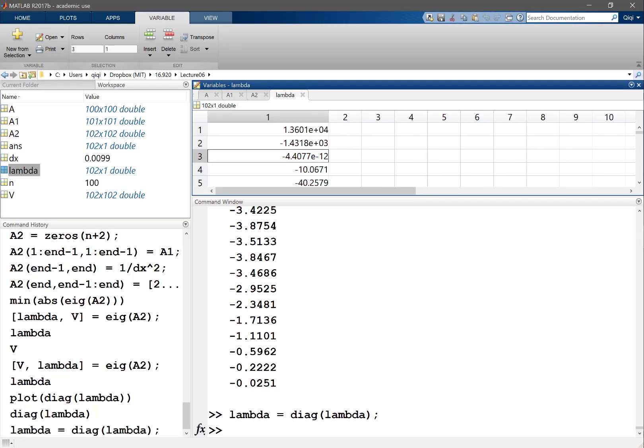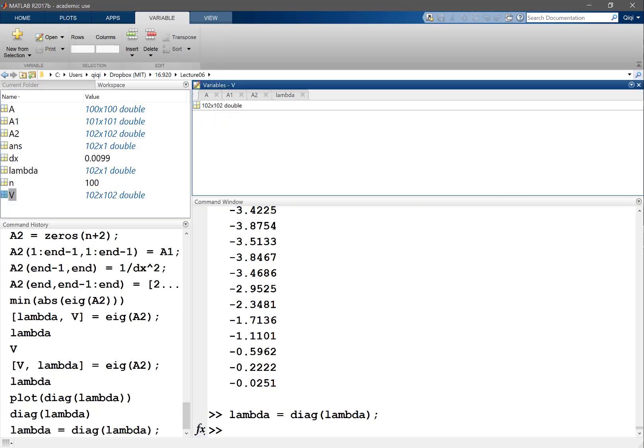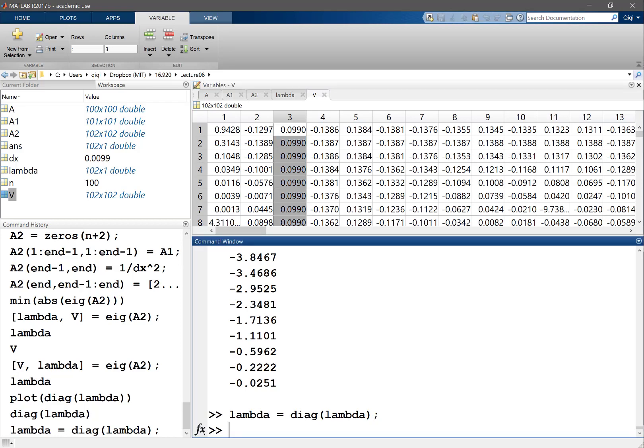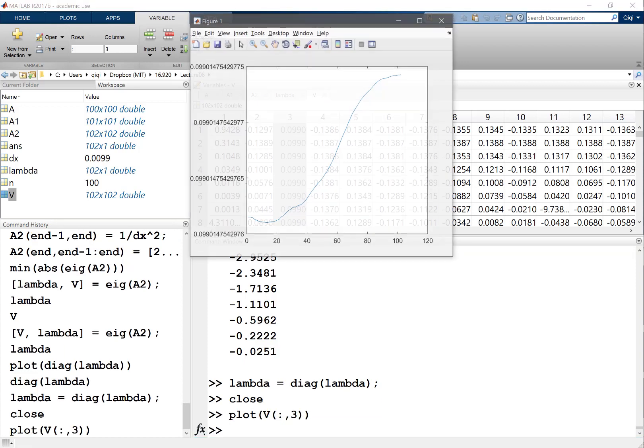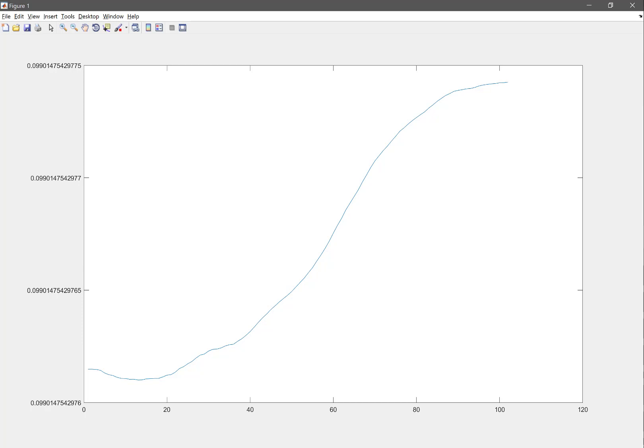Let's do lambda equal to diag of lambda to be a little bit easier to look at. So lambda is this, this. Okay, so it's the third one that is almost zero, right? So that means we want to look at the third eigenvector of the matrix, which is actually containing V. So that's this one. So if you look at it, plot V3, well, what is it? It's basically a constant, right? So basically this goes unstable by a constant term.